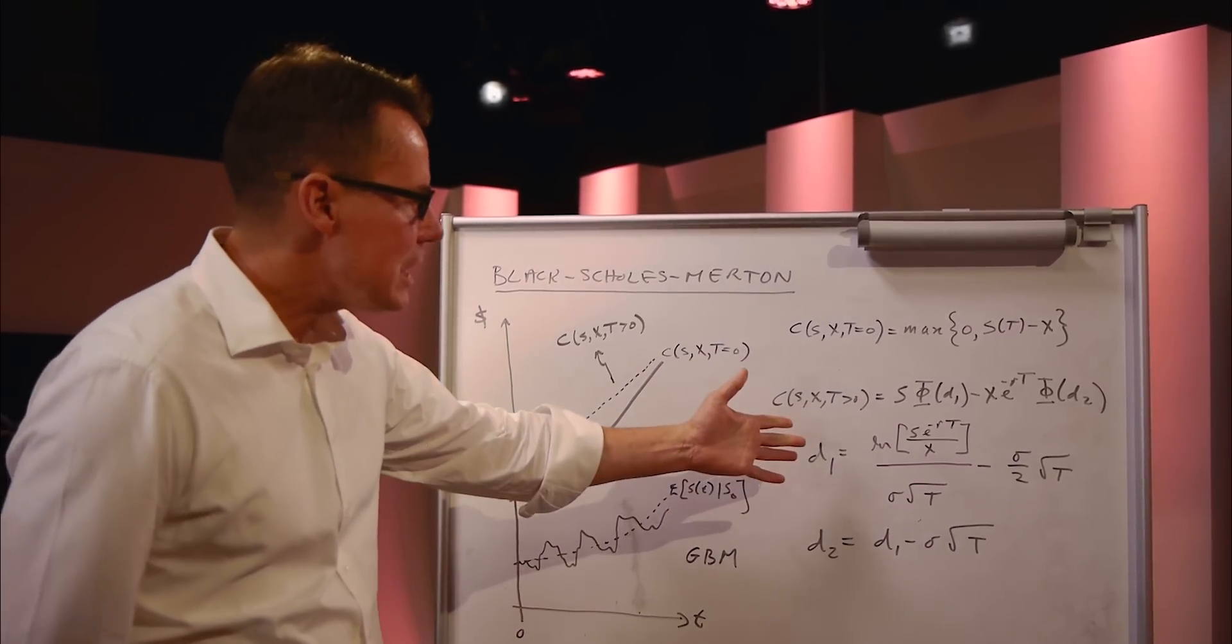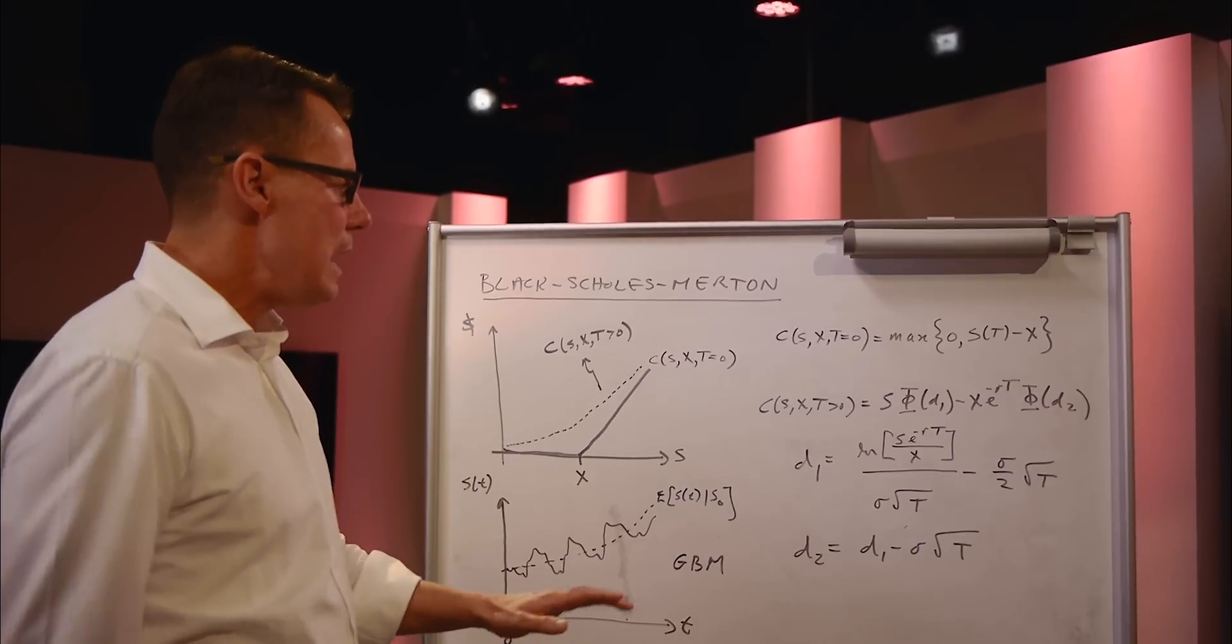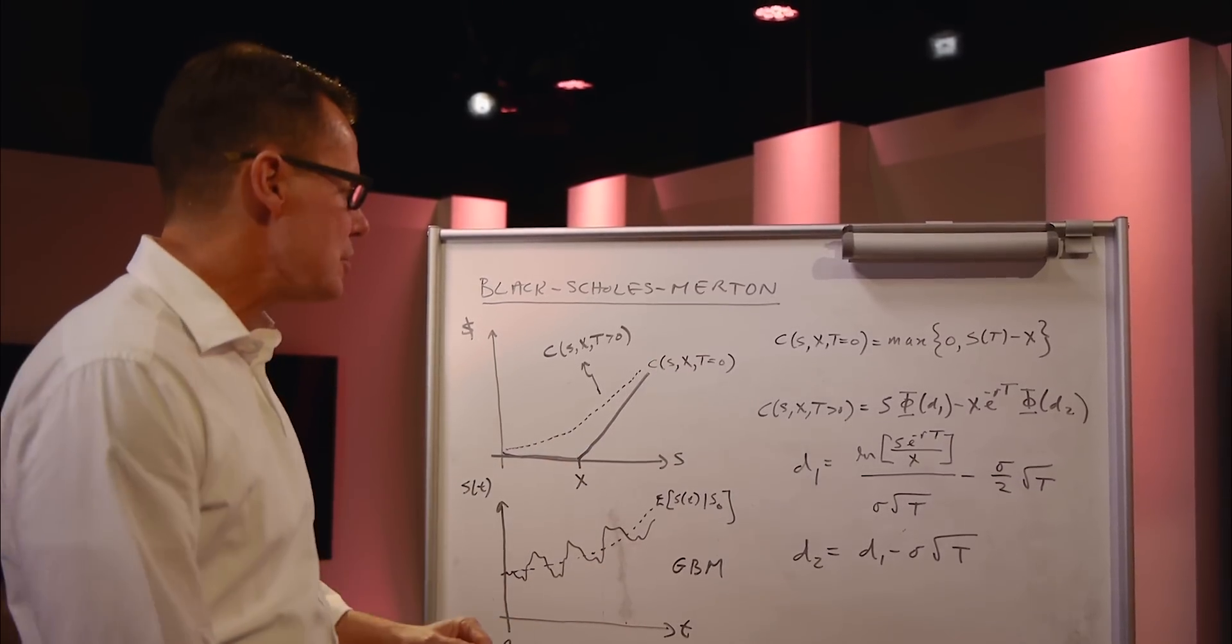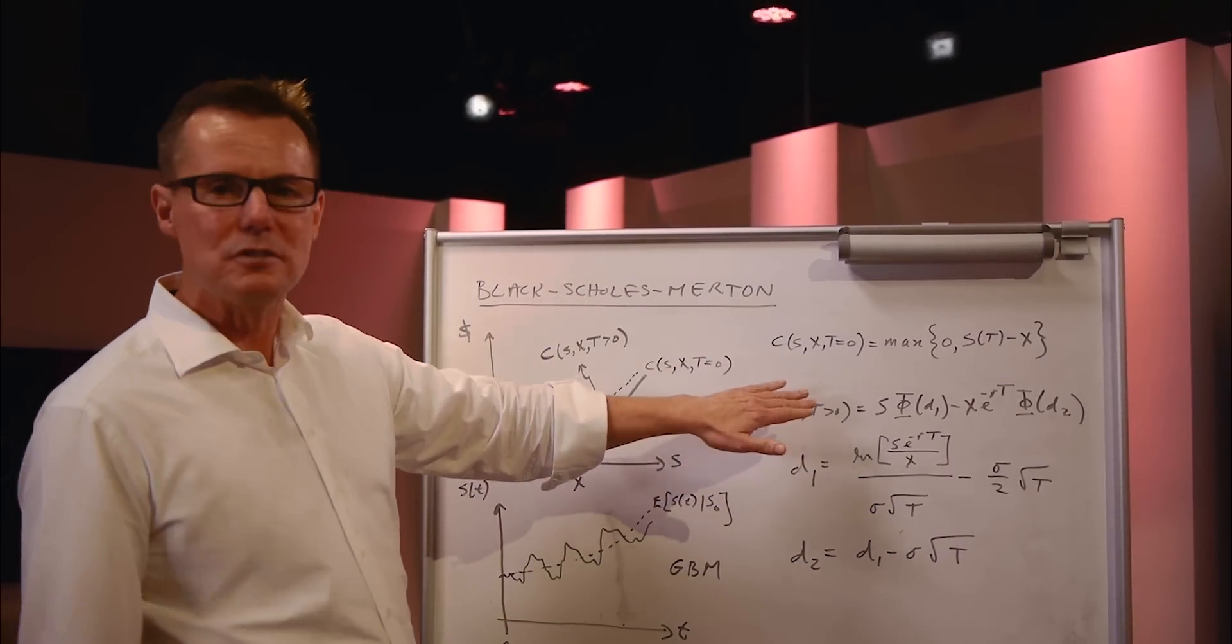There's a very daunting equation which represents the Black-Scholes value for a call option, but the intuition of the equation is actually very simple. So what I have here is two versions of the equation.